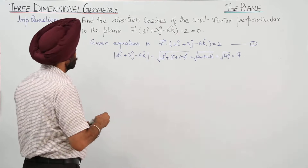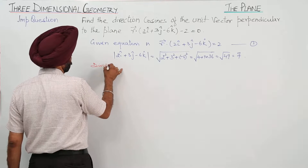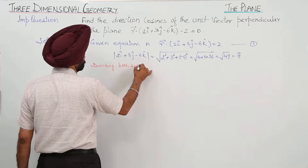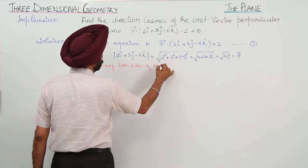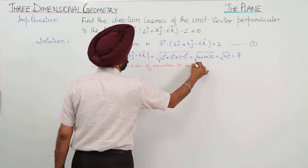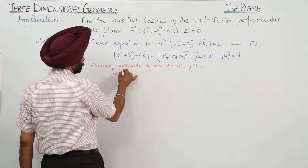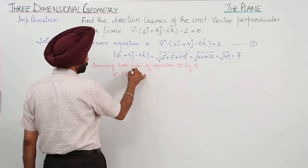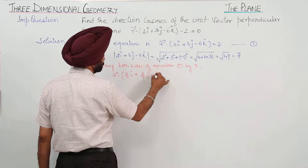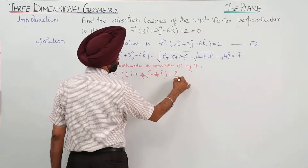Dividing both sides of equation 1 by 7, we get: vector r dot (2/7 i cap plus 3/7 j cap minus 6/7 k cap) equals 2/7.